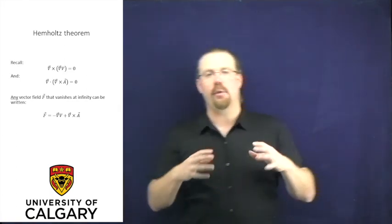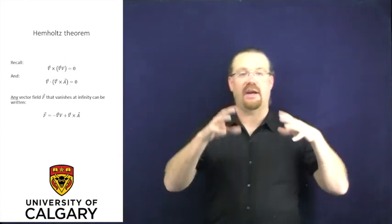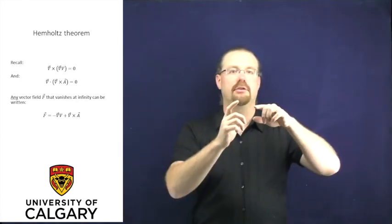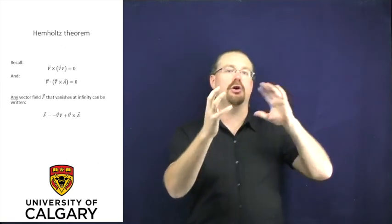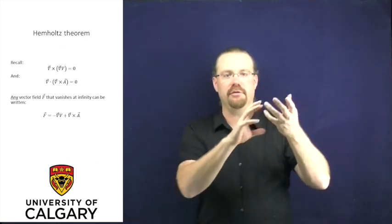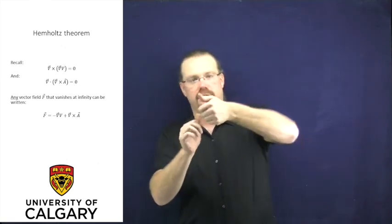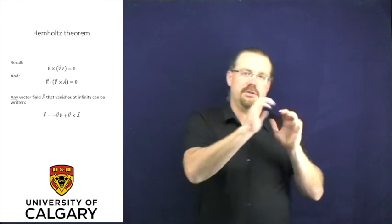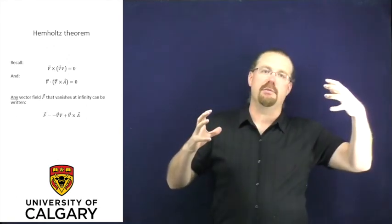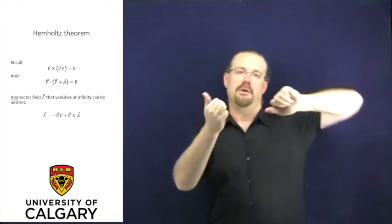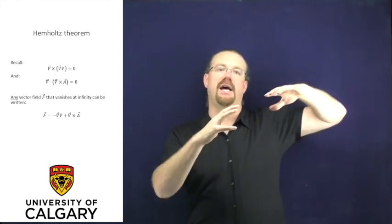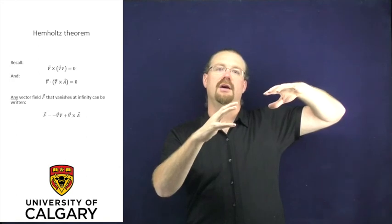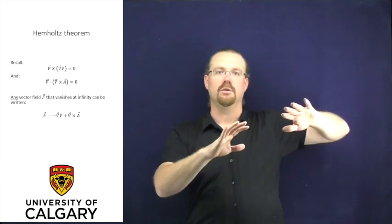In a similar vein, if you have some vector field pointing in all the different directions and you take the curl of that vector field — figuring out what the circulation density is at every point — and you go through and take the divergence of that, that will always equal zero.